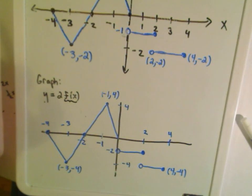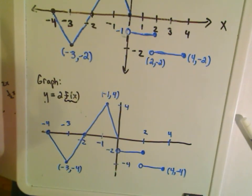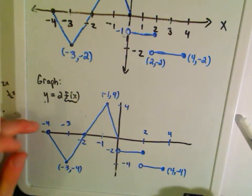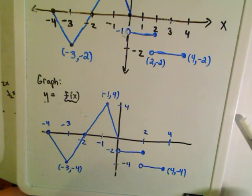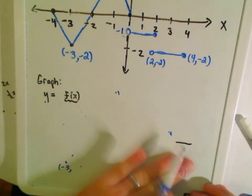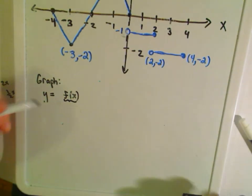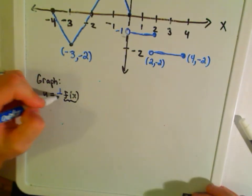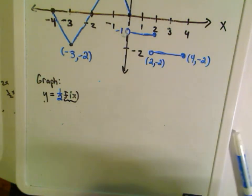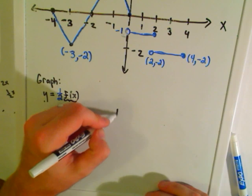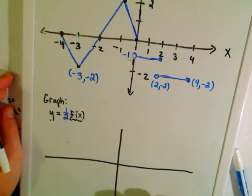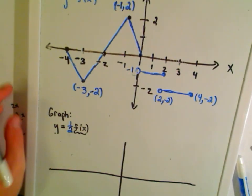Let me do one more in this video. Instead of multiplying by two, suppose we multiply by one-half up front. It's going to have the same idea — obviously not the exact same effect — but the idea is the same.